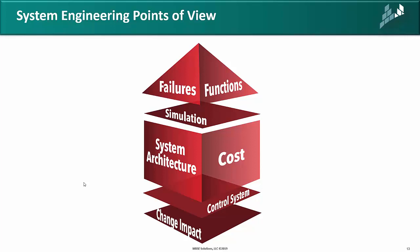System engineering has many points of view. I want to pull a system model together and might want to see it from the architecture point of view — all the architecture stuff and related interfaces. I might look at it from a cost point of view, showing reports for cost, cost impact, change impact. I might want to see it from a control system point of view — showing the software people how to do their jobs, the electrical people how to design the right layout. How do you know you have the right inputs and outputs of the control system? I can look at failures, functions and simulation, change impact — there are many more.